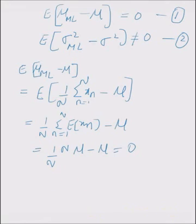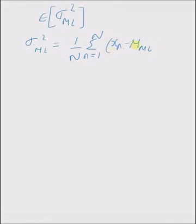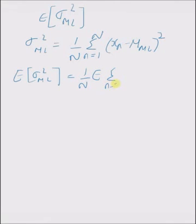Now consider the expectation of σ²_ml, which is the maximum likelihood estimate of the variance. By definition, σ²_ml, as derived in the previous video, is given by 1/n times the summation from n=1 to N of (x_n minus μ_ml) squared. So, the expectation of σ²_ml becomes 1/n times the expectation of the sum from n=1 to N of (x_n minus μ_ml) squared.